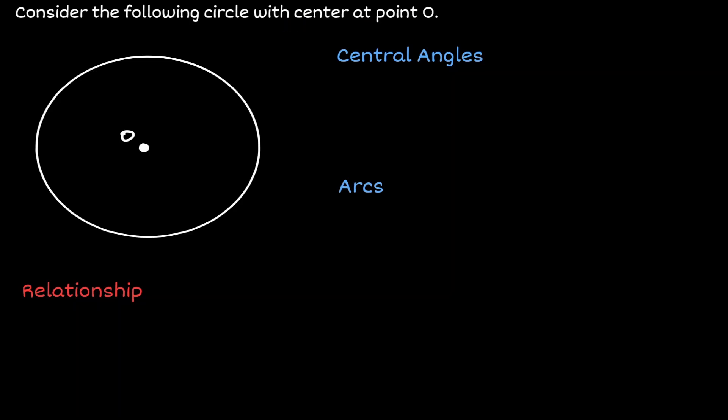If we choose two random points on the circumference of the circle, let's call them R and S, and if we connect those points to the center of our circle,